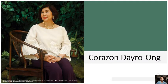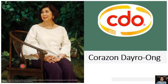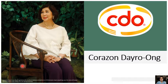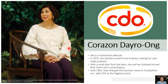We have here Corazon Dairo Ong. Her famous product is the ham that we always look for at Christmas or New Year. Her business is CDO — we are all familiar with it. We always have different products from CDO in our homes. When you accompany your parents to do the groceries, you may be aware that they always buy products from CDO — they have ham, tocino, canned goods, and actually so many more. So it all started with CDO.